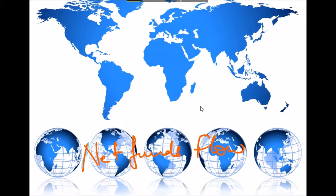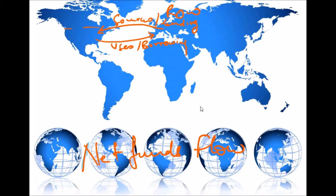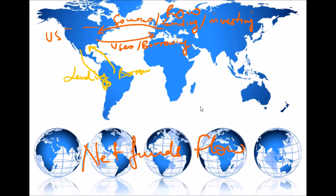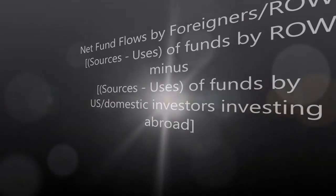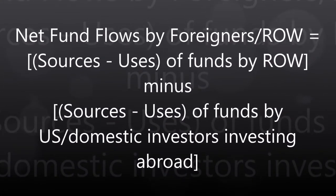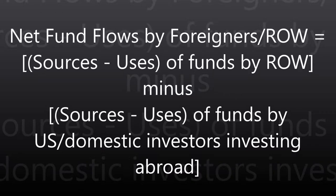As we all know, foreign investors invest in assets in various countries such as the US, and US investors invest in assets abroad such as Japan, China, Russia, etc. This flow of funds between countries has an effect on the exchange rates and interest rates in those countries. Foreigners borrow and lend in US dollars, so when foreigners borrow it translates to a dollar outflow, and when foreigners lend it amounts to a dollar inflow.